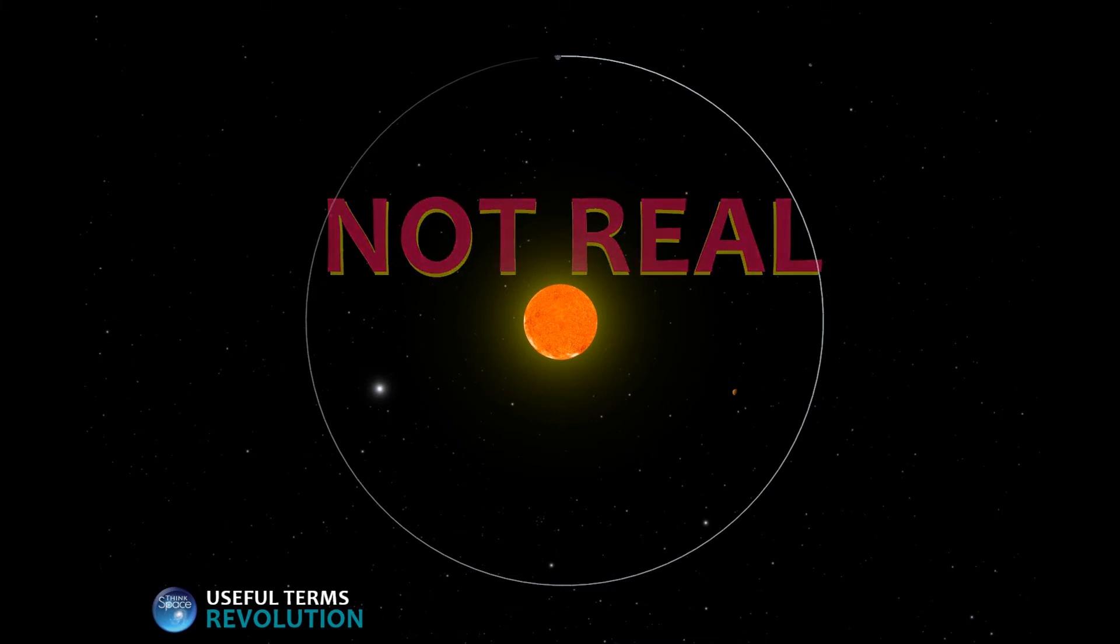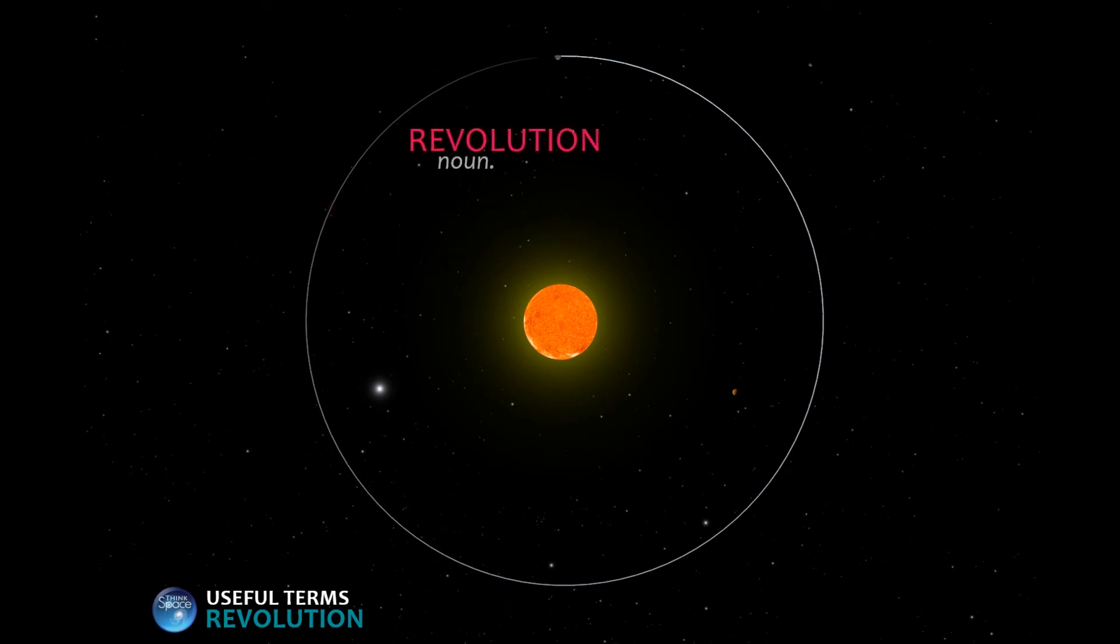Let's start with the definition. A revolution refers to the path the Earth takes as it orbits around the Sun once. When it completes one revolution, it starts the next one. So how long does it take?